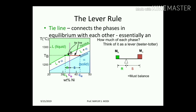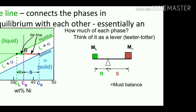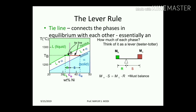Think of it as: mass of alpha × S = mass of liquid × R — they must balance. This balance is represented by the lever arm rule in the case of the isomorphous system, where both metals are soluble in the liquid and solid state.